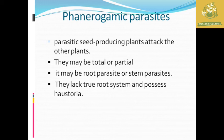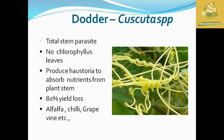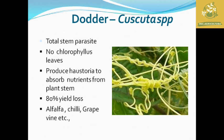They lack a true root system and possess haustoria for absorption of nutrients from their host. For example, dodder, which is a Cuscuta species, is known as the total stem parasite. It has an absence of chlorophyllous leaves and is totally dependent on the host plant, producing haustoria to absorb nutrients, causing up to 80% yield loss in host crops like alfalfa, grapevine, chili, and mango.